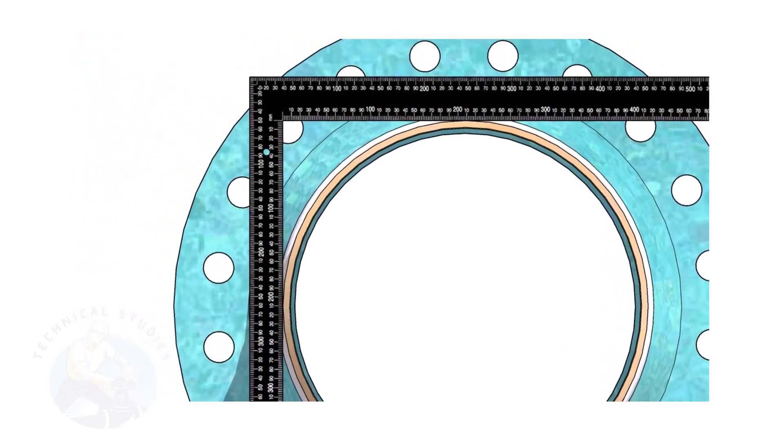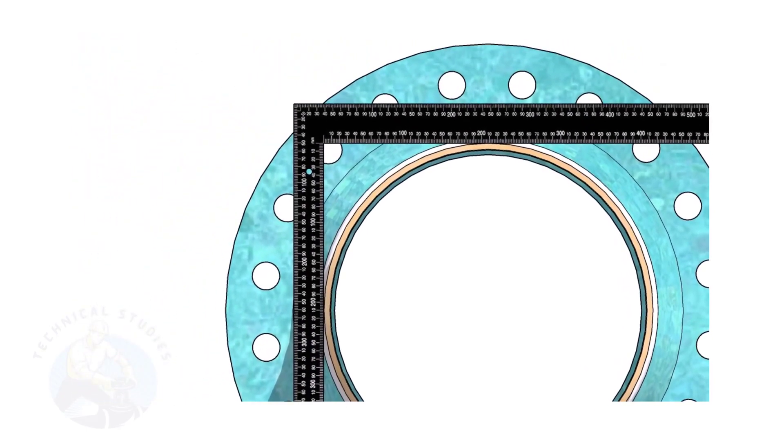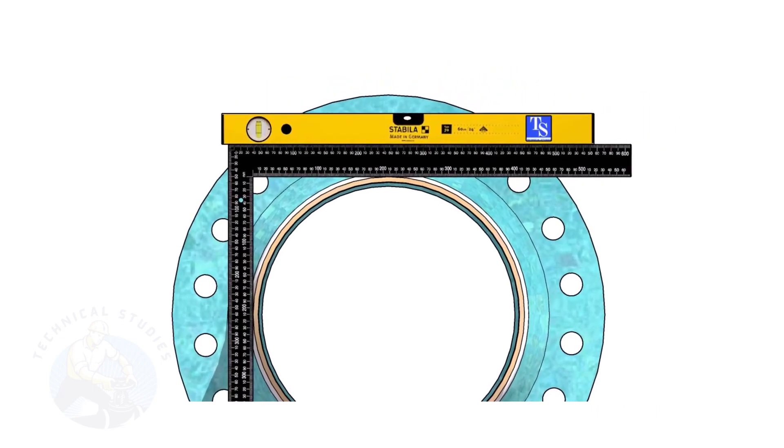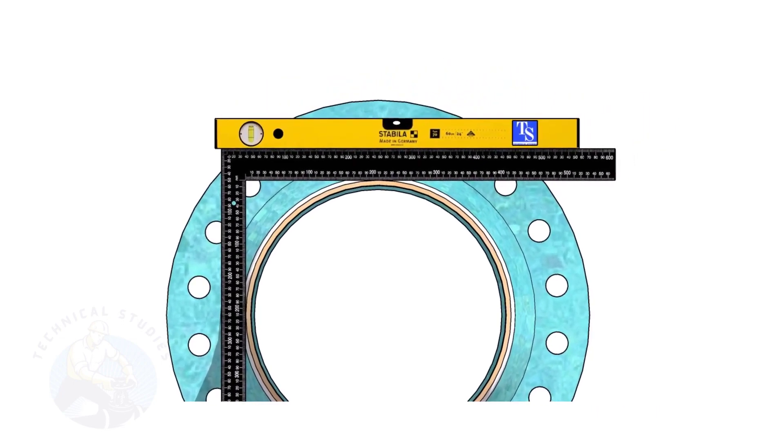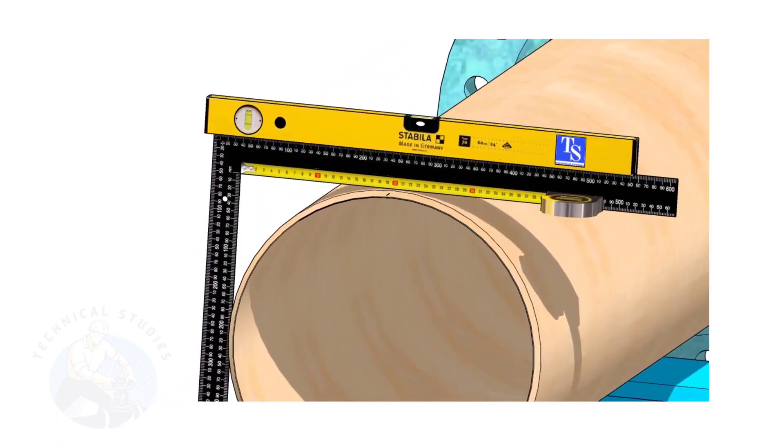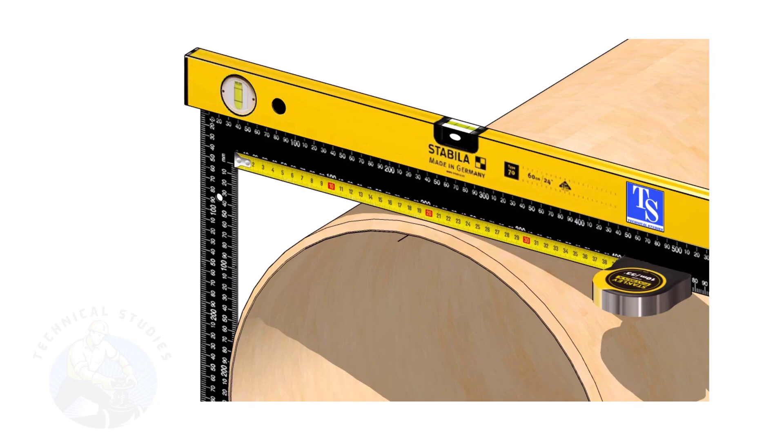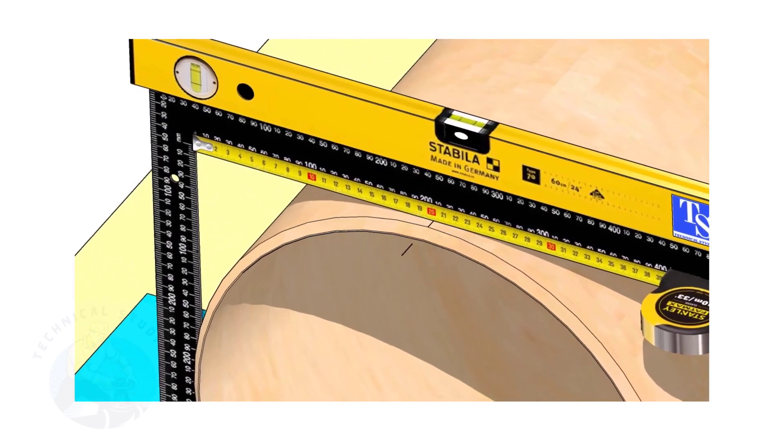Hold a large right angle on the pipe as shown. Put a spirit level on the right angle and correct the top level. Mark half OD of the pipe on the top side. Here, the half OD is 203 millimeters.